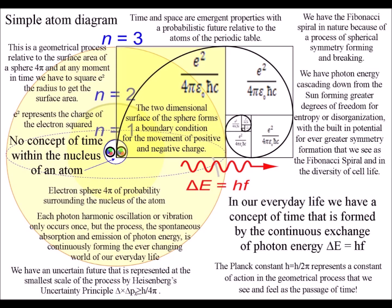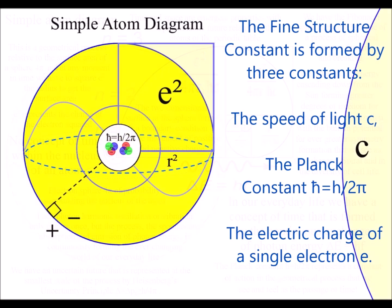No one knows why we have this constant. It is formed by three constants: the speed of light c, the Planck constant h, and the electric charge of a single electron e.